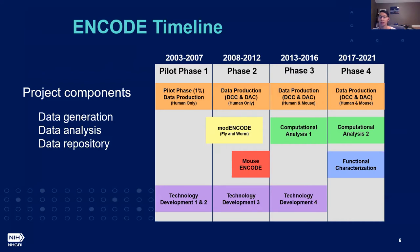As we move into phase three, there is more of a focus on human and mouse projects. We see the funding of the first round of computational analysis projects, where these projects were being tasked with applying computational analysis methods to the data being generated by the consortium.